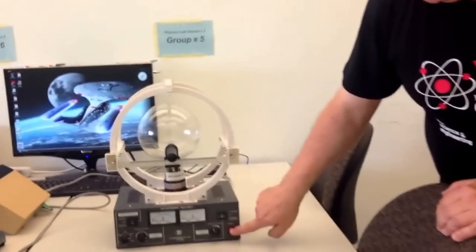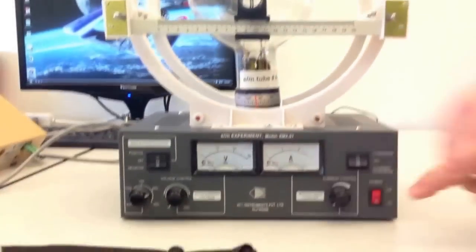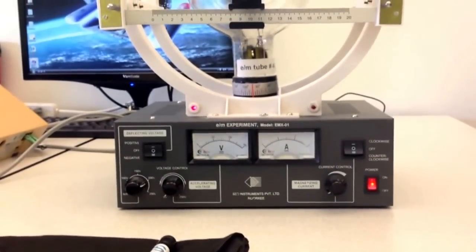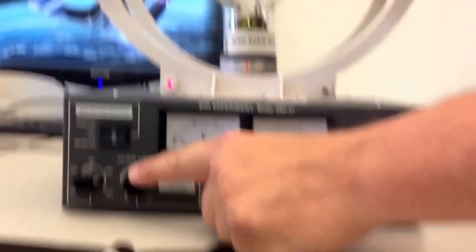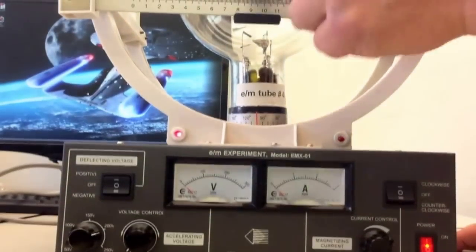First of all, there is a master switch here. Let me turn these off first. There is a master switch. You turn it on. And there is a switch over here which is for voltage across two plates in the vacuum tube.